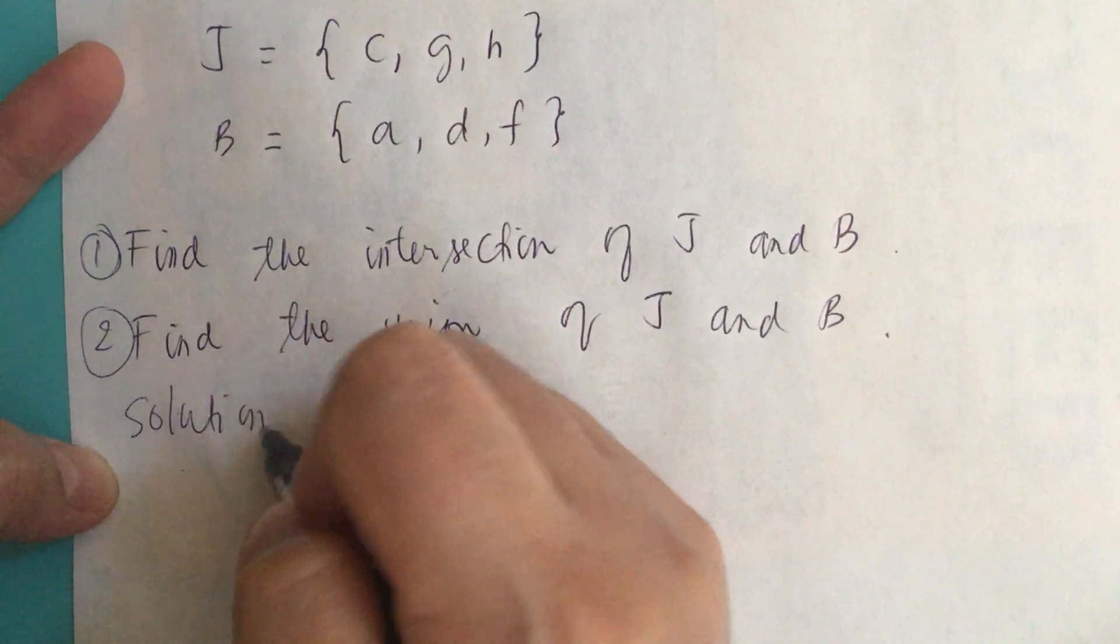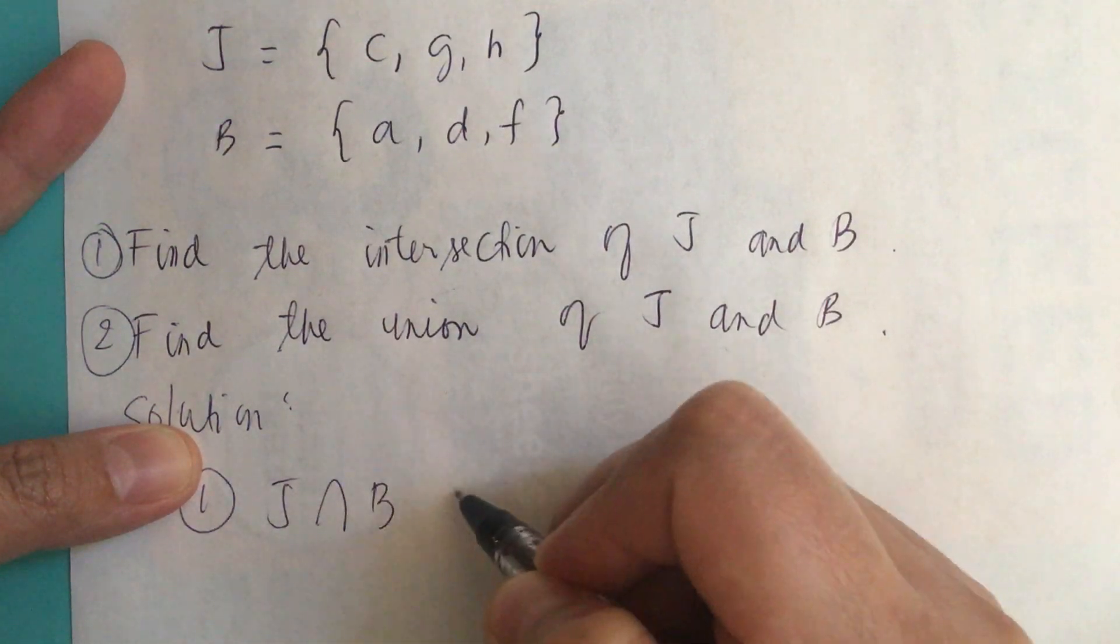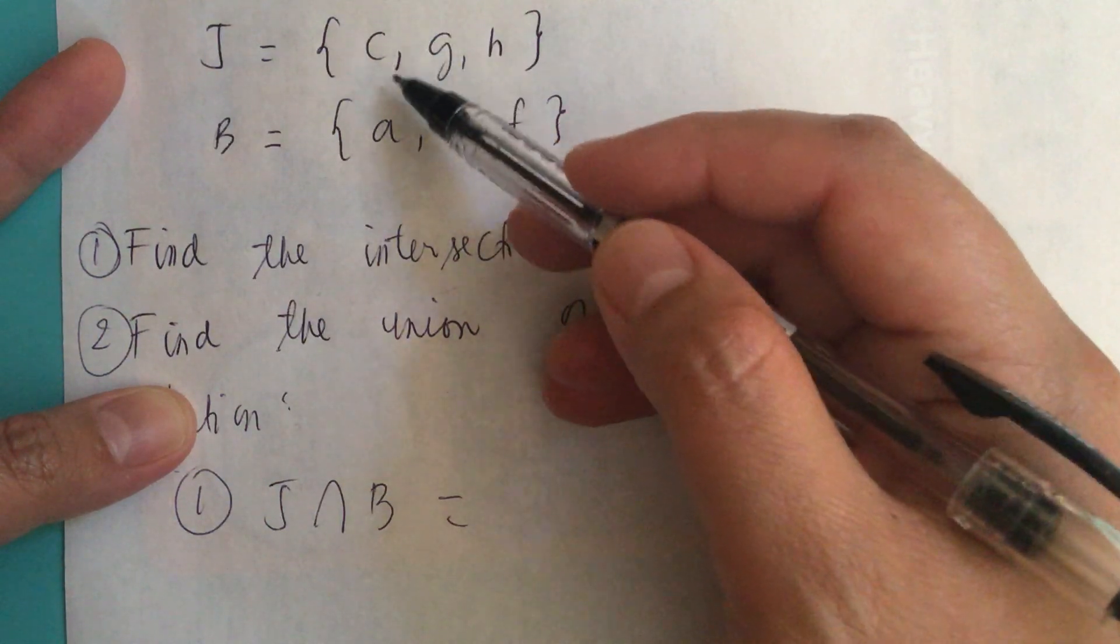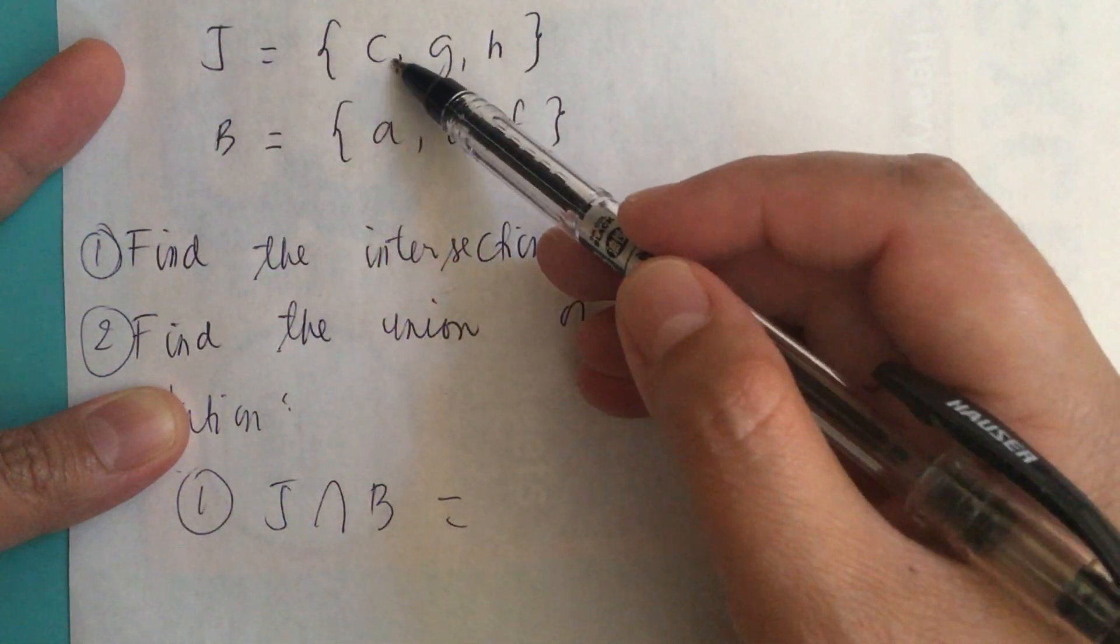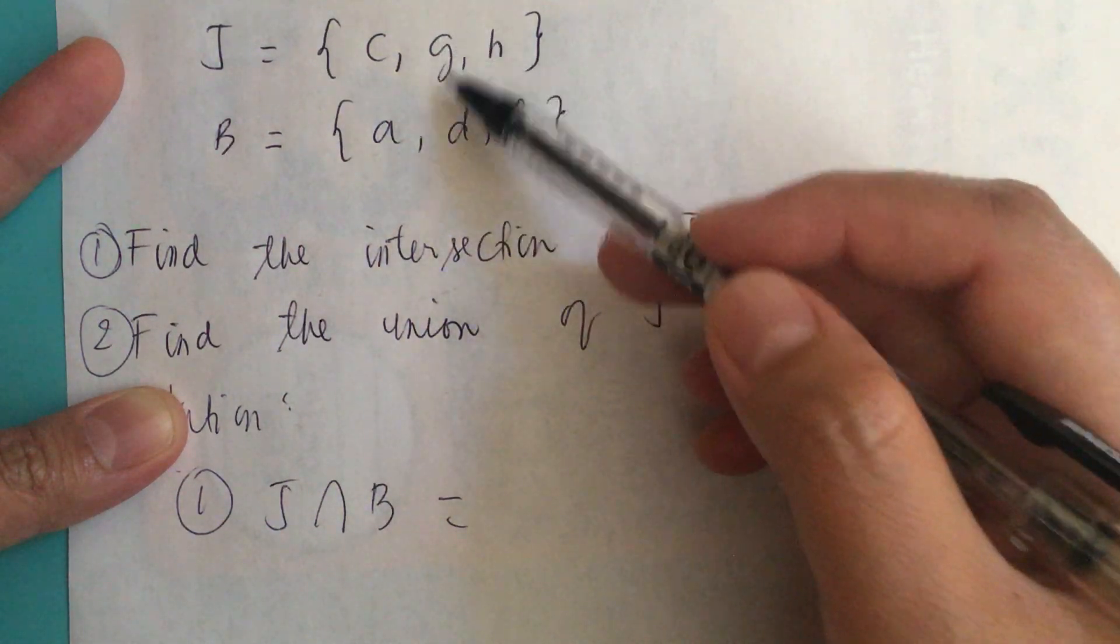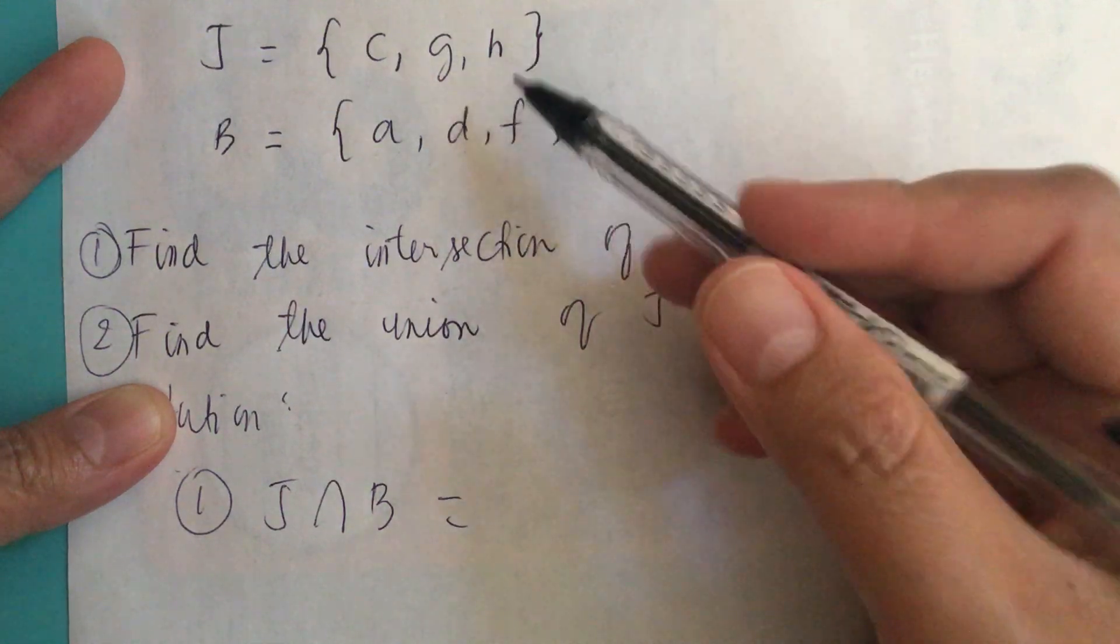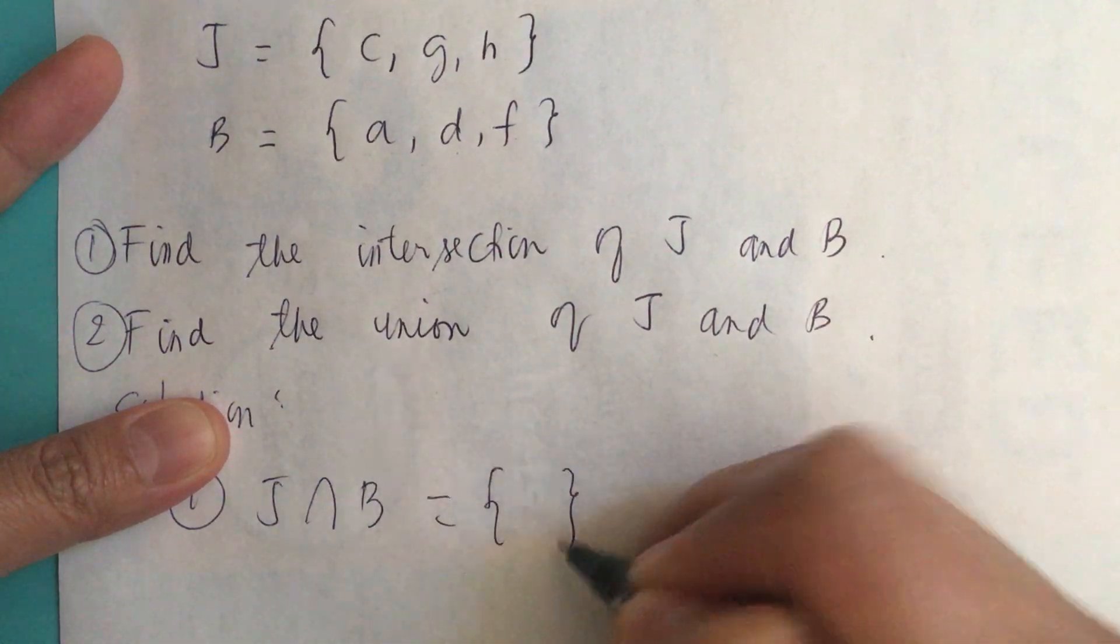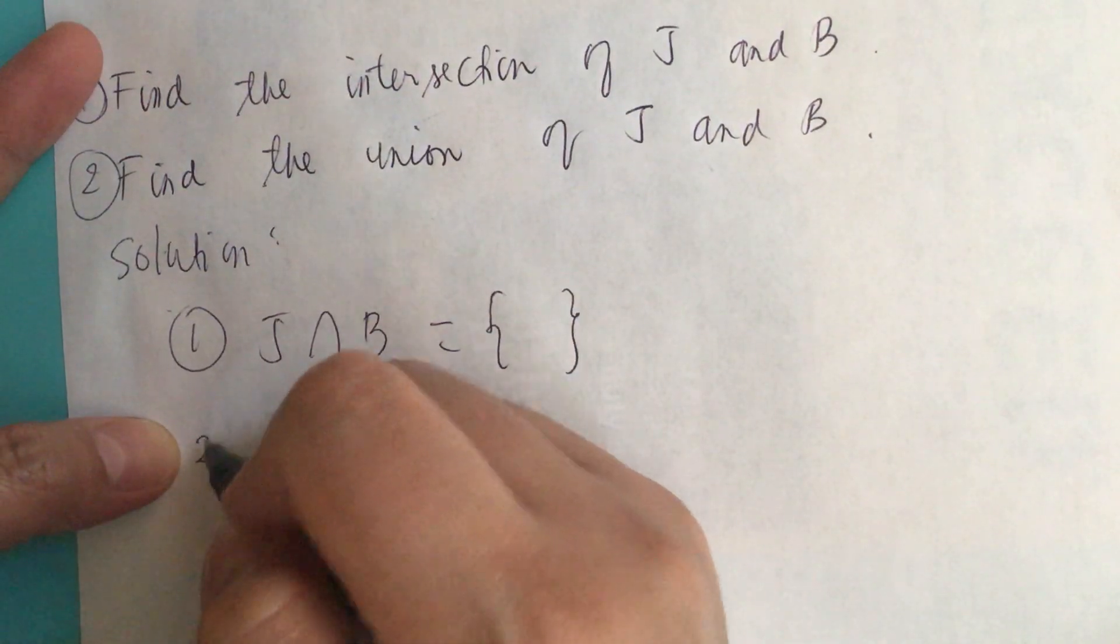J intersection B. Basically, it's the objects or numbers that they have in common. For J, it's C, G, H, and B is A, D, F. They don't have members that are common. So the intersection is going to be empty set. They have nothing in common. Empty set.